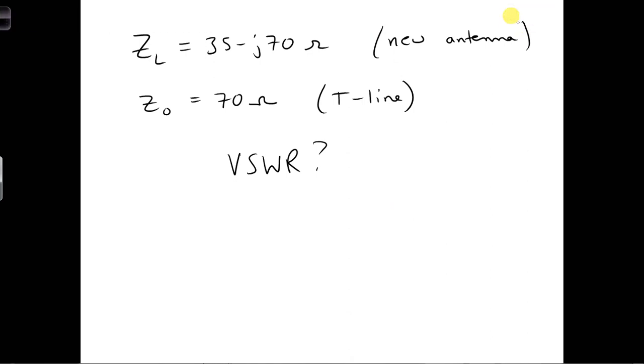To calculate the VSWR, we need the reflection coefficient. And the reflection coefficient is ZL minus Z naught over ZL plus Z naught.